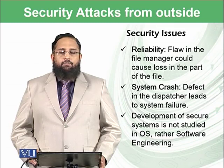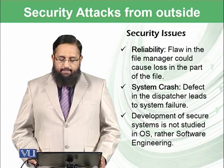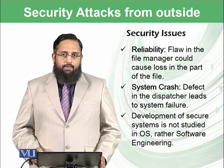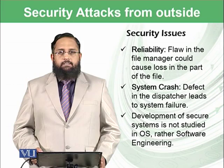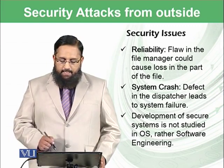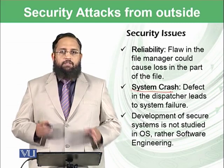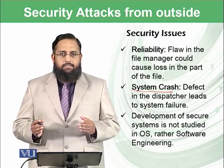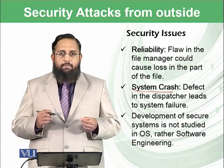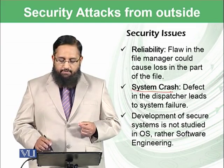There are different kinds of security issues. One kind is known as reliability issues. For example, if there is a flaw in the file manager that could cause loss of part of a file — meaning the file manager is corrupt or having some issues — such problems are treated as reliability issues. Another type is system crash, which is a defect in the dispatcher. The dispatcher allocates time slots to processes, and if some process takes a bit more than its slot by manipulating the operating system, such issues are treated under system crash.